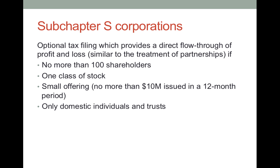There has to be one class of stock — you can't have preferred or other kinds of stock. S corporations are really aimed at small businesses. There has to be a small offering, so no more than $10 million worth of stock was issued from the corporation to the shareholders in any 12-month period. It's available only to domestic and not foreign individuals or trusts. A trust is an artificial way to hold assets — many families set up trusts for businesses to own assets, for example putting a house in a trust so that when parents die, it doesn't necessarily trigger a transfer. Only domestic individuals and trusts are eligible to declare for subchapter S treatment, though always check the IRS regulations to see whether the law has changed.